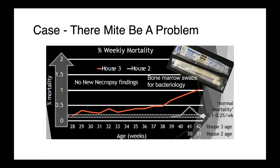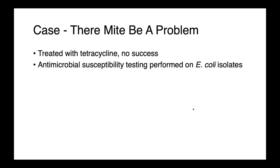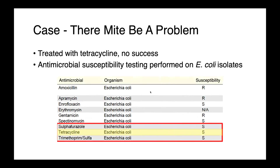Diagnostic investigations were done on birds from this flock, and E. coli was isolated on bone marrow swabs submitted for culture. What was really interesting, and maybe a little surprising, is that therapy with tetracycline was not successful. Antimicrobial susceptibility testing revealed a pretty susceptible E. coli — it was in fact susceptible to tetracycline. So Jenny and I started to have a conversation: as a poultry vet, she wanted input from a microbiologist on why these birds were still dying despite an infection with an organism that should have been susceptible to the treatment.